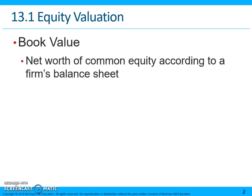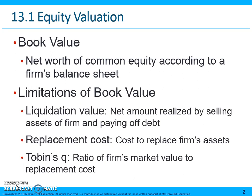Book value is the net worth of common equity according to a firm's balance sheet. This is a historical value — it has nothing to do with market value. It includes depreciation and doesn't include future growth opportunities or other things of value to the firm, like the name of the firm. Apple, for example, has a very valuable name, and its products have unique values greater than similar products at other firms.